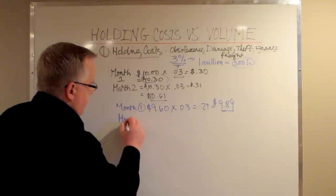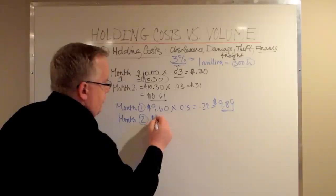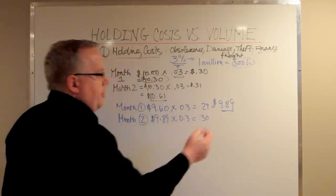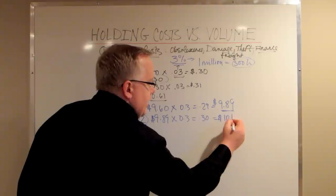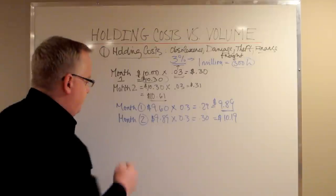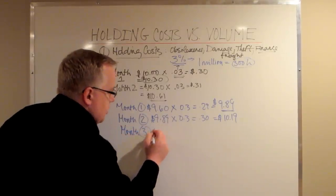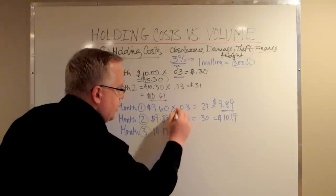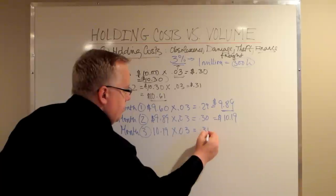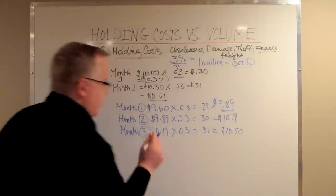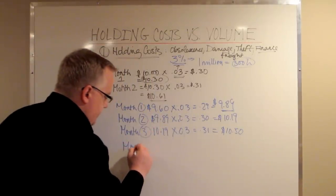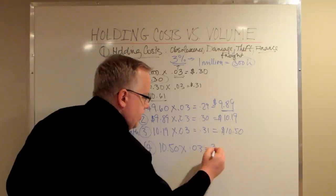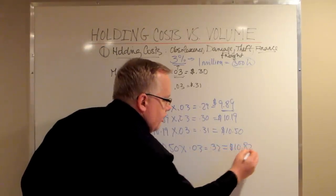Month number two, you're now going to start off with $9.89. You're going to hold some parts for one month. At the end of the month, you're going to pay another $0.30, and this is going to be $10.19. So again, you're still ahead of the game. Month number three, this is $10.19 multiplied by 0.03 - it's going to equal 0.31, and that's going to give you $10.50 as a final cost at the end of the third month. Month four, this is going to start off at $10.50 multiplied by 0.03. It's going to give you 0.32. That's going to give you a final cost of $10.82.